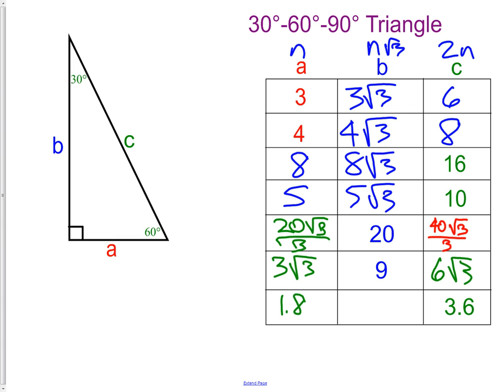And to get our b, we would have 1.8 root 3, which depending on the way the answer is listed, you may have to multiply out, or you maybe can leave it the same way it is.